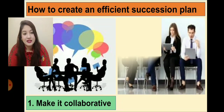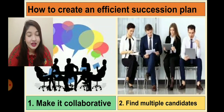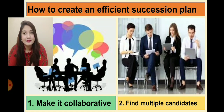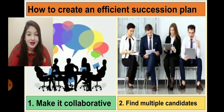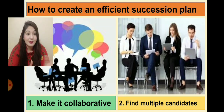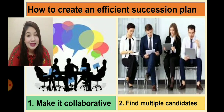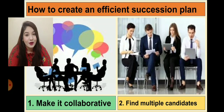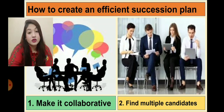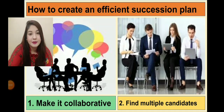The next step is to find multiple candidates. When a person is retiring, they may want to hand over power to their children or a business partner. But there should be a process for choosing multiple candidates, because if there is any uncertainty or problem in the organization, the business can be handed over to another potential person. So it is necessary to select multiple people within the organization.